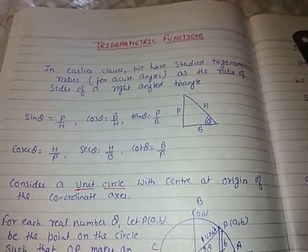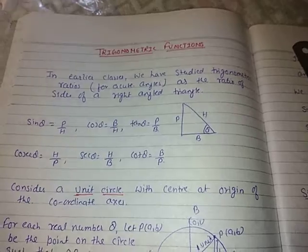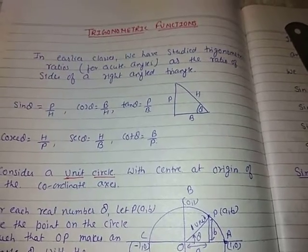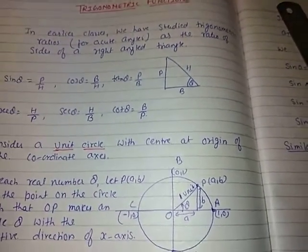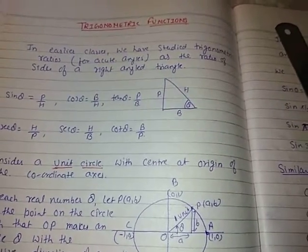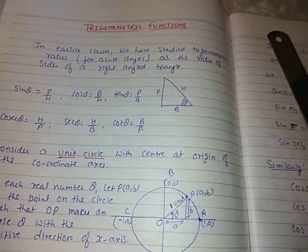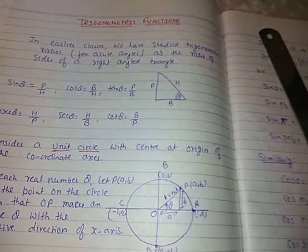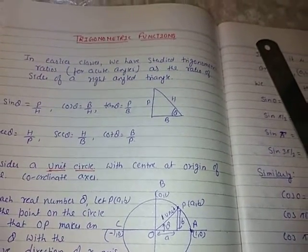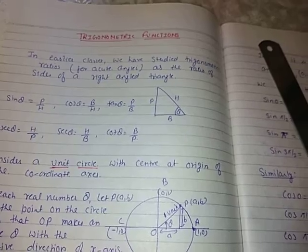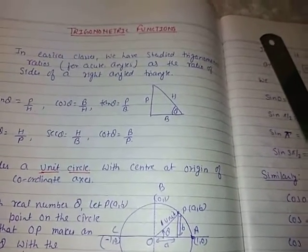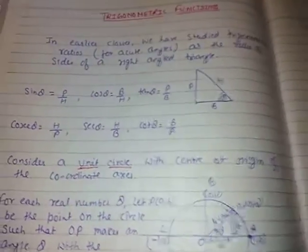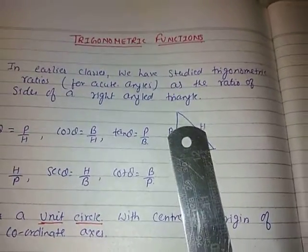Hello children, in this video I am going to explain exercise 3.2, that is trigonometric functions. I have already explained 3.1 in previous two videos, where angles and their measurement, degree measurement, radian measurement, and conversion of degree to radian and radian to degree were explained, and questions of 3.1 are already done. Now I am going to explain exercise 3.2, that is trigonometric functions.